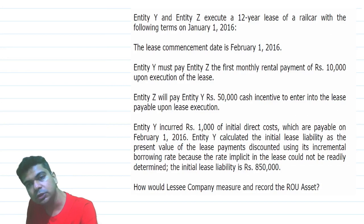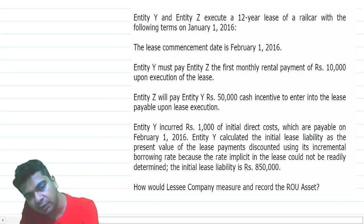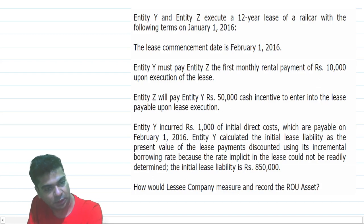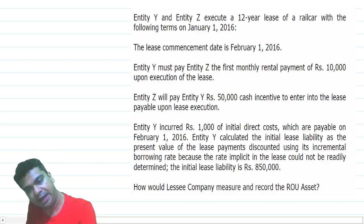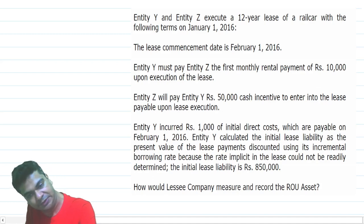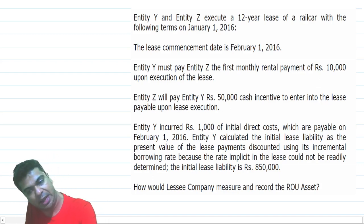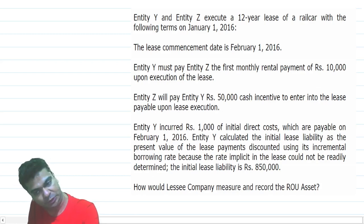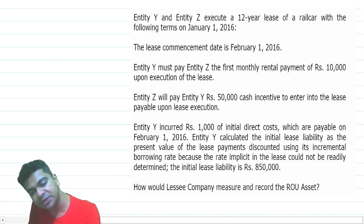Entity Y and Entity Z execute a 12-year lease of a rail car on January 1st, 2016. The lease commencement date is 1st February 2016. Entity Y must pay Entity Z the first monthly rental payment of Rs 10,000 upon execution of the lease. Entity Z will pay Entity Y Rs 50,000 cash incentive to enter into the lease, payable upon execution. Entity Y incurred Rs 1,000 of initial direct costs, payable on 1st February 2016. Entity Y calculated the initial lease liability as the present value of lease payments discounted using its incremental borrowing rate, since the rate implicit in the lease could not be readily determined. The initial lease liability is Rs 8,50,000. How would the lessee company measure and record the ROU asset?